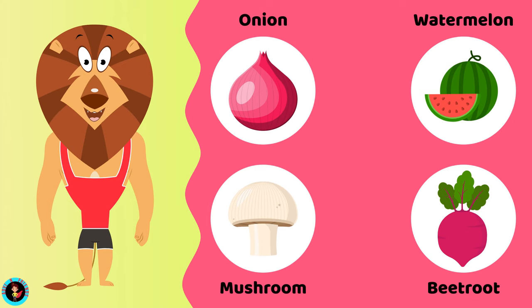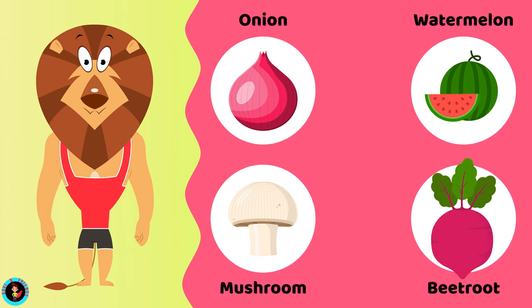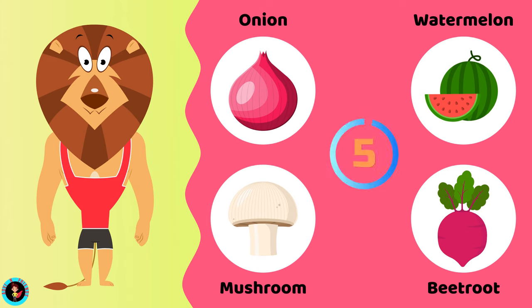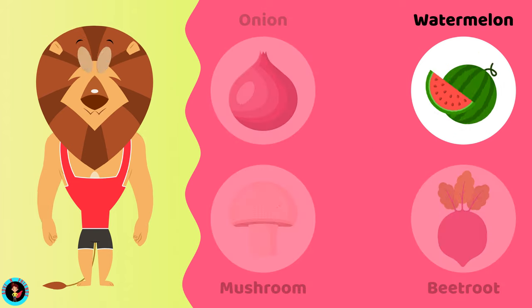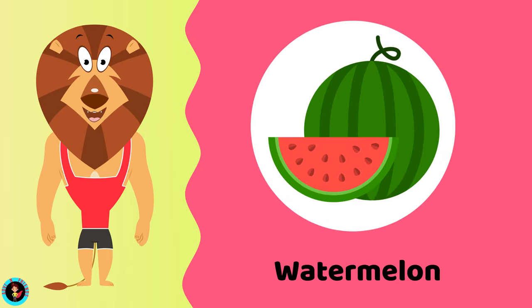Which among these is a fruit? Onion. Watermelon. Mushroom. Beetroot. The right answer is Watermelon. Watermelon is a fruit.